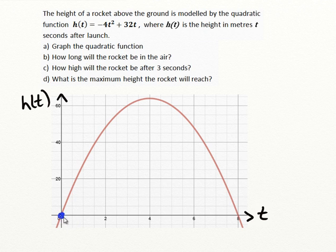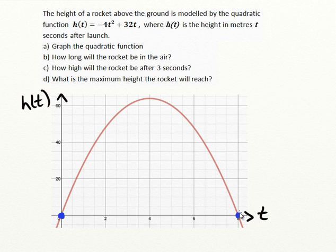At time 0, the rocket is on the ground with a height of 0. That matches what we see in the equation, because the equation is written in standard form — there are no brackets, so it's not vertex form and it's not factored form. But it's missing the constant term on the end, which is the y-intercept, so if it's missing, it must have been 0. Sure enough, this had a y-intercept of 0. If we look at the graph, we can see that at 8 seconds, the path of the quadratic crosses the x-axis again, so the rocket will be in the air for a total of 8 seconds.